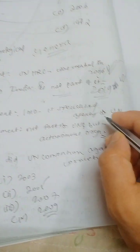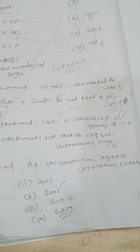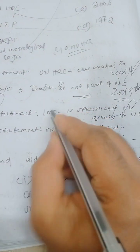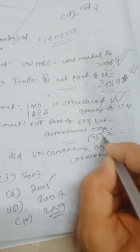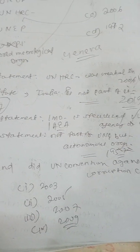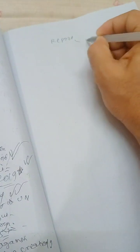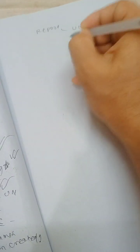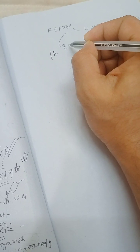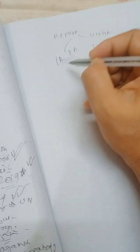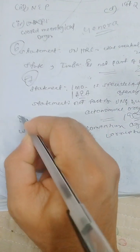Question seven: the International Maritime Organization is a specialized agency of the UN — this is correct. The International Atomic Energy Agency (IAEA) is not a part of the UN but is an autonomous organization founded in 1957. However, it submits its reports to the UN General Assembly (UNGA) and the UN Security Council (UNSC). Both statements are correct.